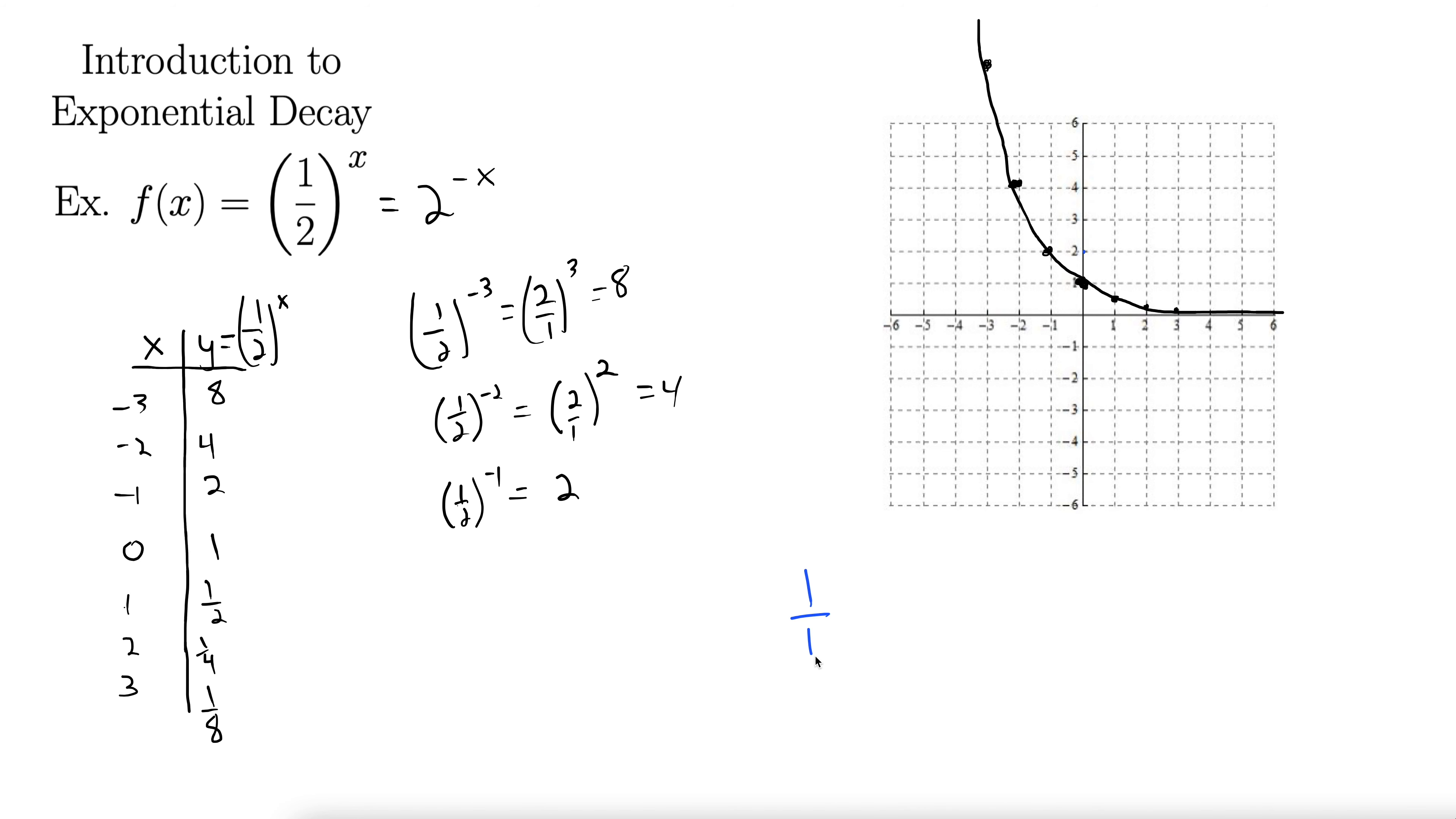In general, when you have 1 over b to the x, which is the same thing as b to the negative x, the graph of it looks like this.